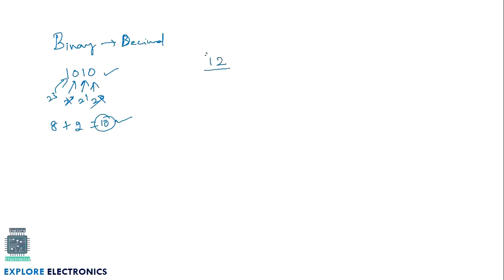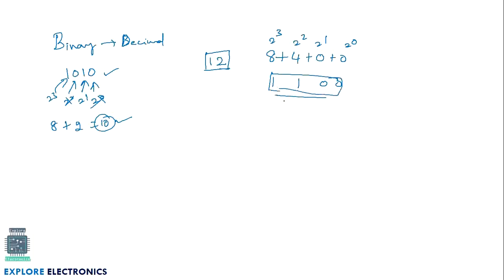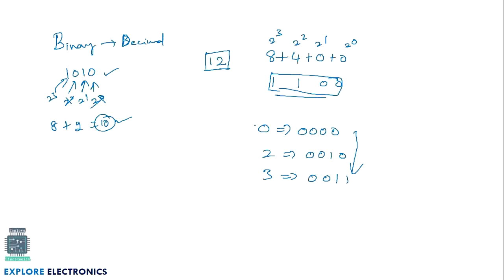To convert 12 into binary: 12 = 8 + 4 + 0 + 0, which is 2^3 + 2^2 + 2^1 + 2^0. Wherever values are present we write 1, giving 1100 as the binary equivalent of 12. With four bits we can also convert to hexadecimal: 0 is 0000, 2 is 0010, 3 is 0011, and so on for each four-bit group.